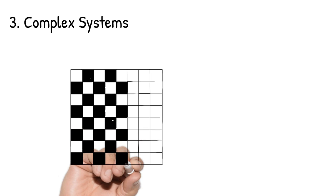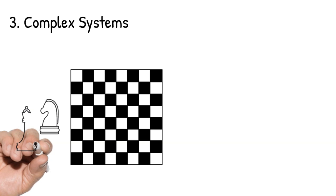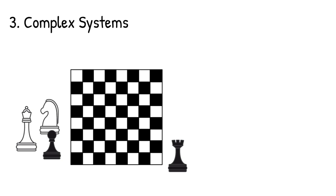And finally, we have complex systems, like games of Go or chess. Like simple systems, complex systems usually only have a few kinds of components that follow a handful of simple rules.